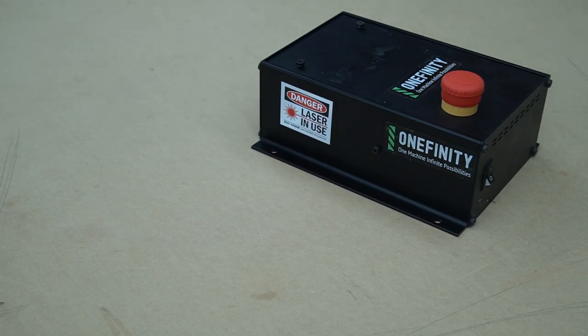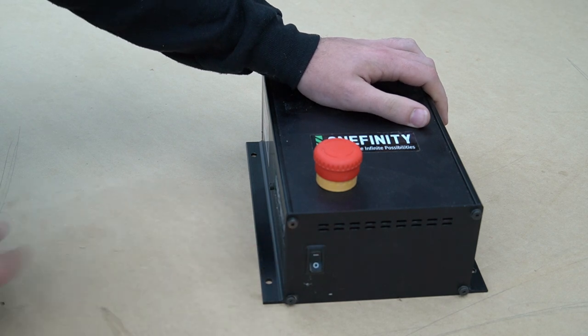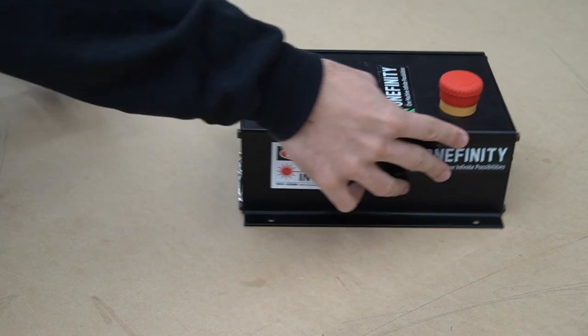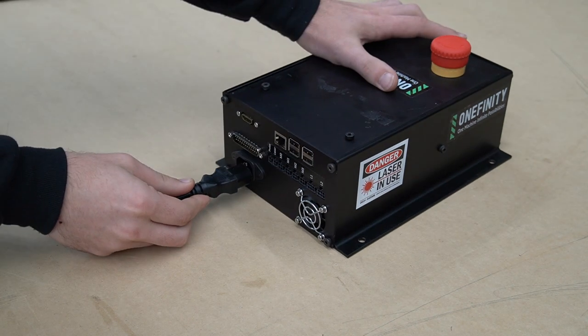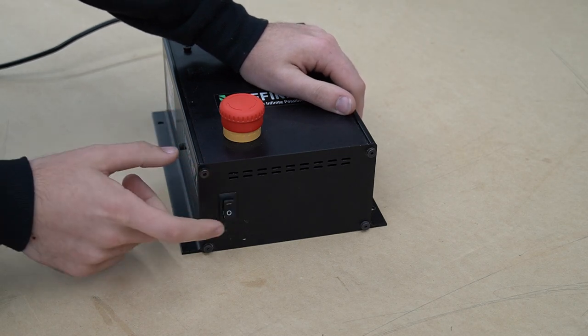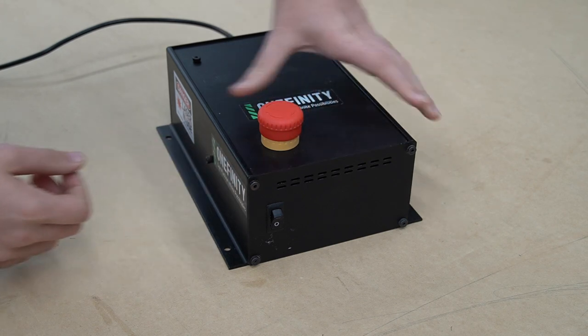Welcome to another Onefinity CNC support video. In this video, we'll be going over the power switch on the controller. From time to time, users that keep their controller close to their machine may see a buildup of dust in their power switch, causing it to fail. Other users may just have a faulty power switch and need to switch it out when we send a replacement. In this video, we're going to show how to do both.